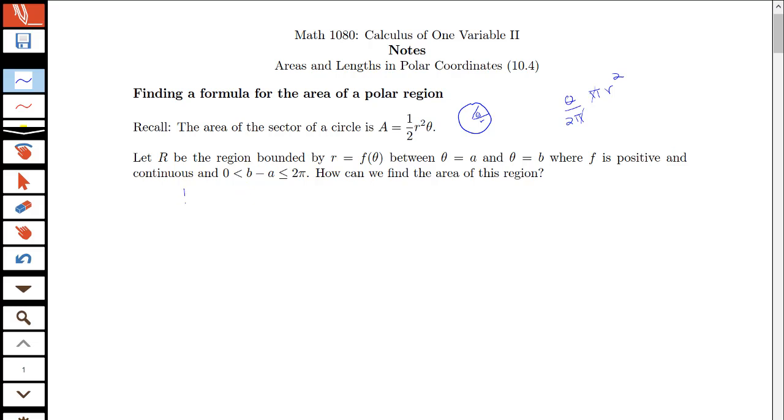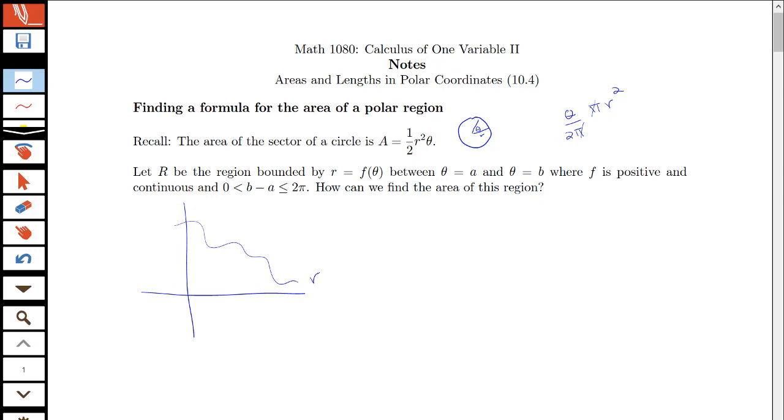So we want to think about how we can find the area of this region. So let's give ourselves a picture to think about. So let's say my polar curve is just doing something like this. Let's say this is my r equals f of theta. And I have my boundary lines here between theta equals a and theta equals b. So I have this region that I'm trying to find the area of.